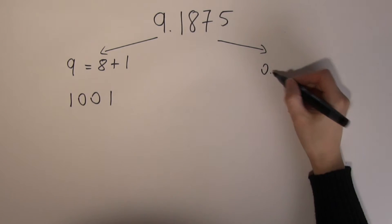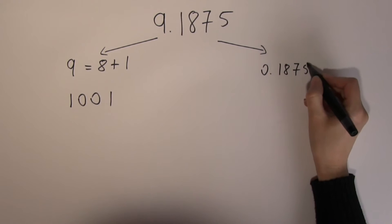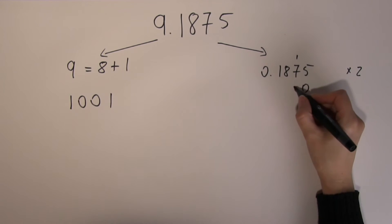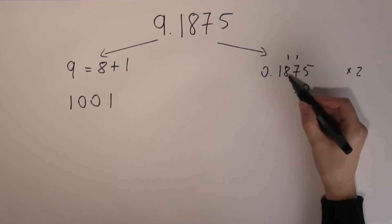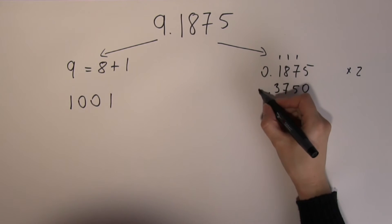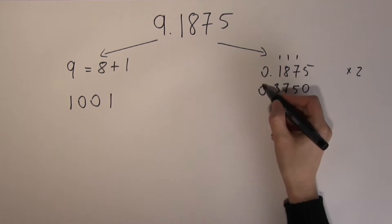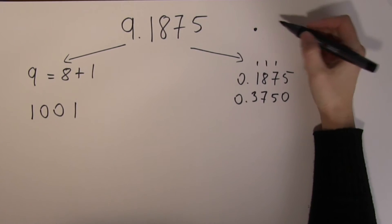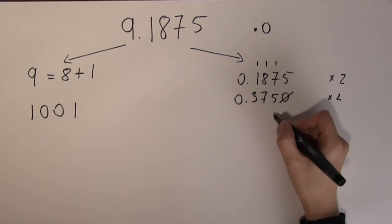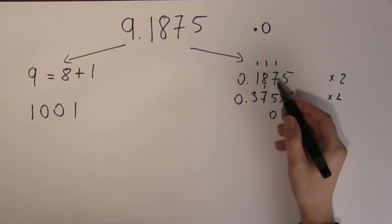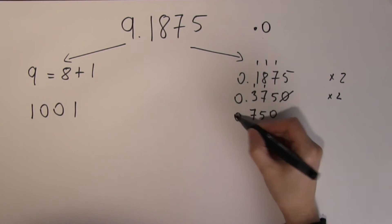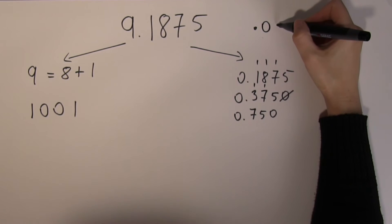Now the decimal part: 0.1875. Let's keep doubling it. 2 times 5 is 10, carry 1. 2 times 7 is 14 plus 1 makes 15, carry the 1. 2 times 8 is 16 plus 1 is 17, carry the 1. 2 times 1 is 2 plus 1 is 3. I did not have any overflow into the whole number part, so the first digit behind the radix point is a 0. Double again: 2 times 5 is 10, carry the 1. 2 times 7 is 14 plus 1 makes 15, carry the 1. 2 times 3 is 6 plus 1 is 7. No overflow, so I record a 0.